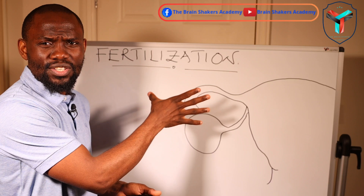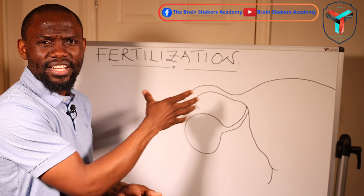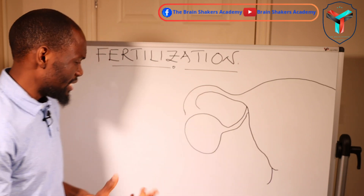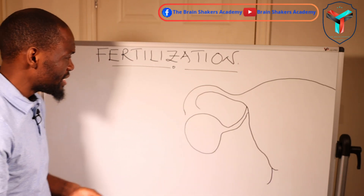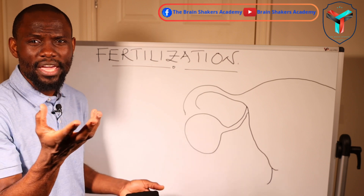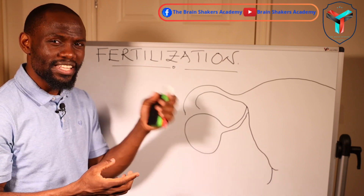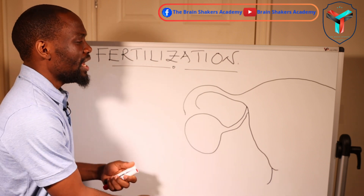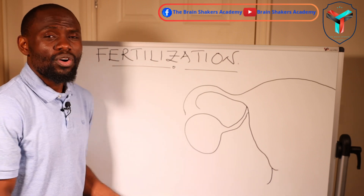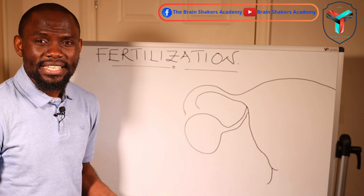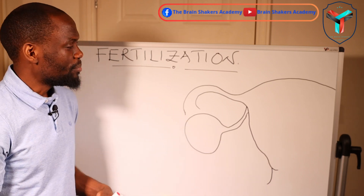Now let's get right into fertilization. We need the sperm and we need the female egg — the ovum — for fertilization to actually happen.